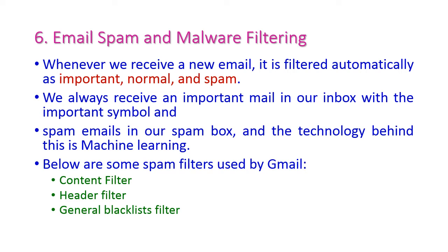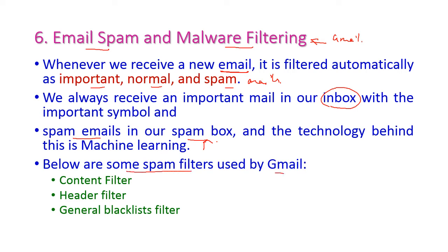The next application is email spam and malware filtering, used in Gmail. Whenever we receive a new mail, the filtering technique automatically identifies whether it is important, normal, or spam mail. Important mail goes to the inbox and spam mail goes to the spam box. The filters used in Gmail include content filter, header filter, and general blacklist filter, which are very helpful in classifying emails.